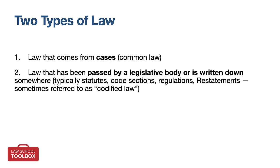Common law comes from cases. That means a judge came up with the law, influenced by any number of sources, and it's now legal precedent. But do all judges have to follow any law that another judge writes down? No. To understand the scope of common law, you must understand which jurisdiction it is binding on, and therefore you must understand the court system. As a federal system, the U.S. has state courts and federal courts, each with its own hierarchy of trial courts and appellate courts.